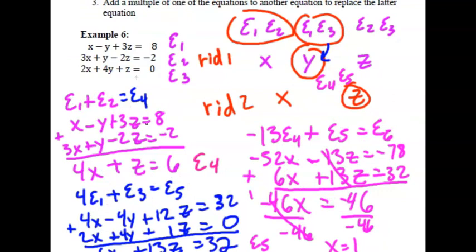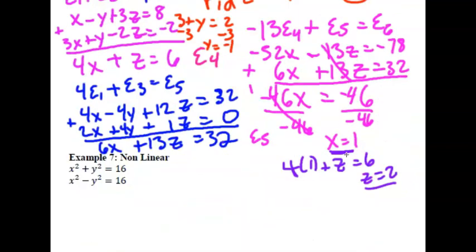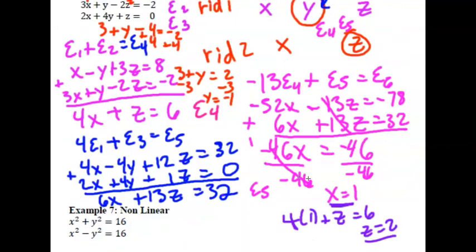So your solution point is 1, negative 1, and 2.